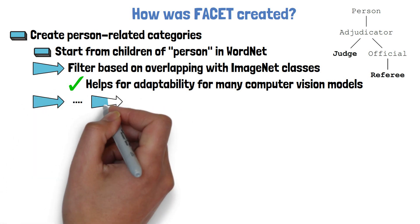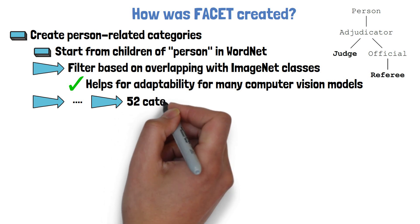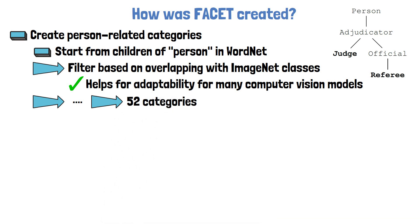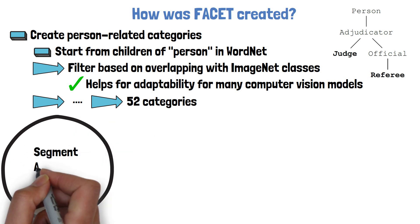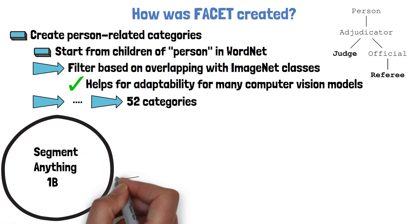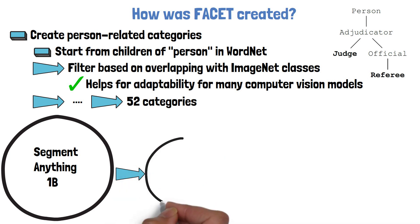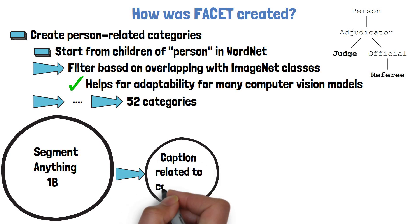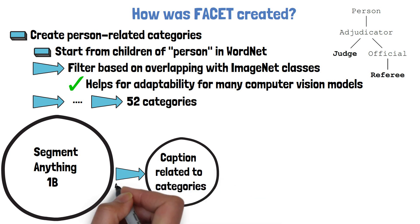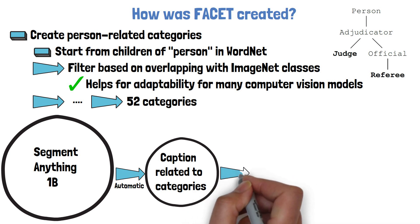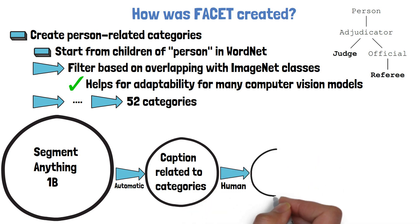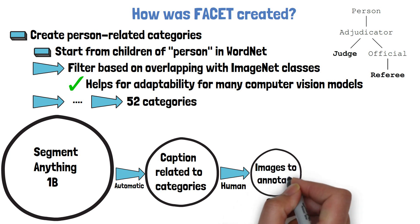After a few more filtering steps, such as removing categories with low numbers of samples, we get the final 52 categories. Then, to create the dataset of images, the researchers start from 1 billion images from the Segment NSE 1B dataset. This set is filtered to images where captions or tags are related to the chosen 52 categories. The first step is automatic preprocessing, followed by another filtering step using human annotators, resulting in 32K images to annotate.